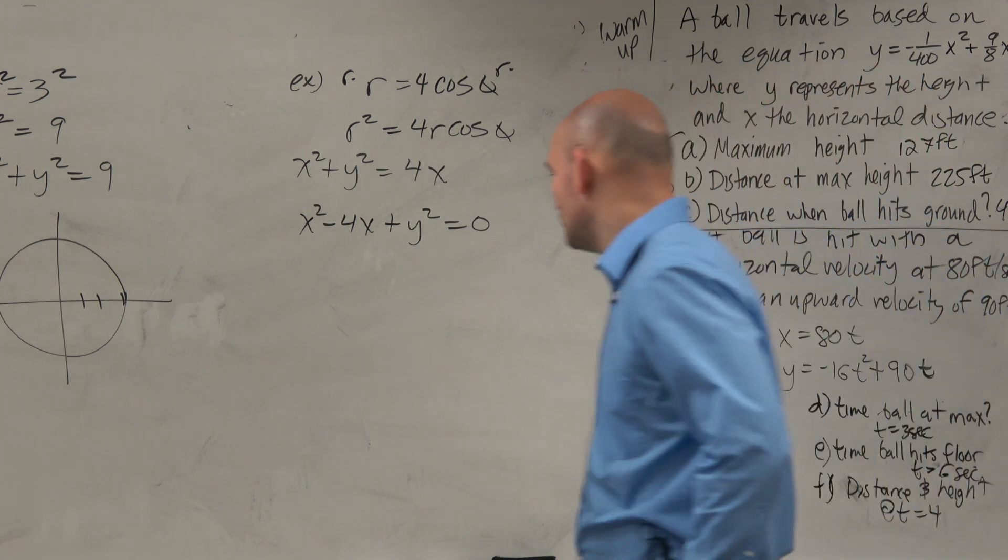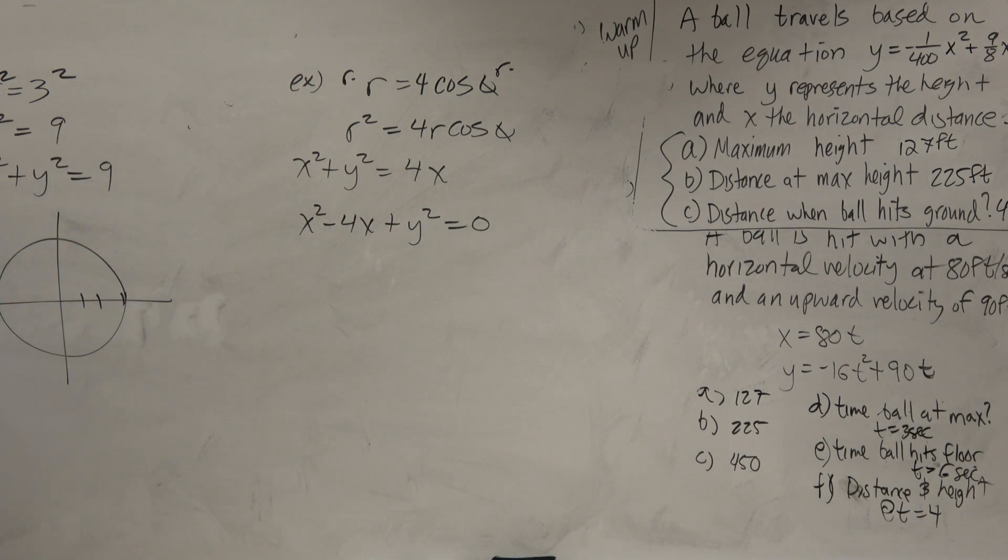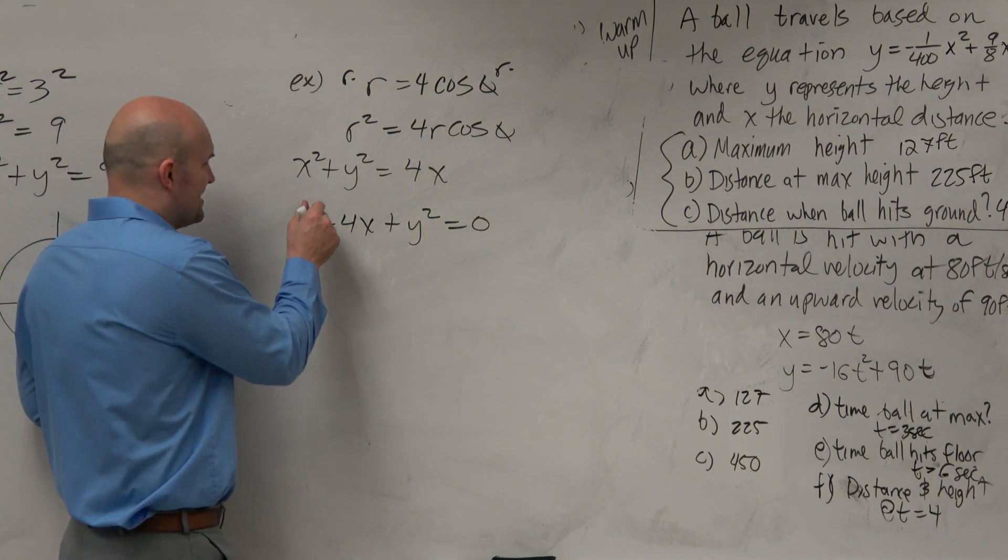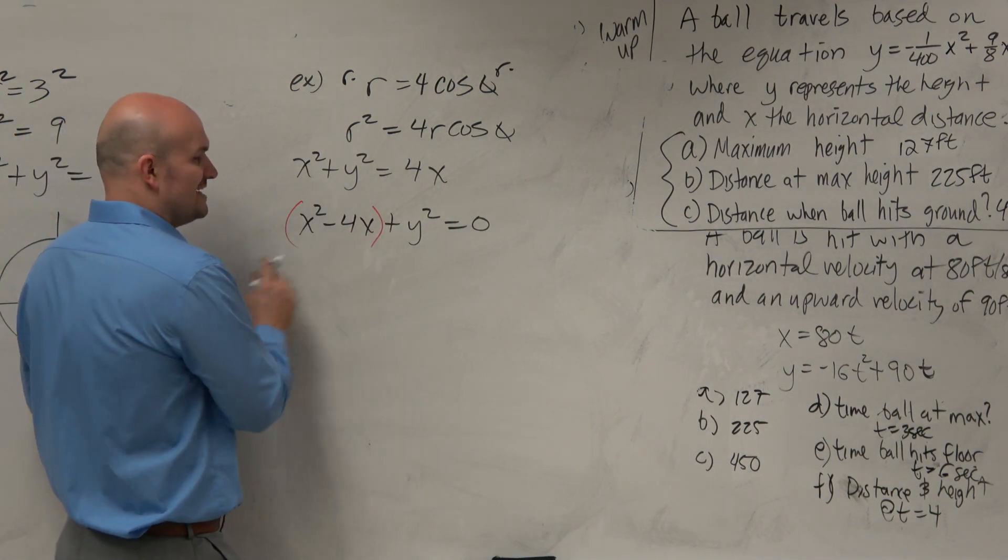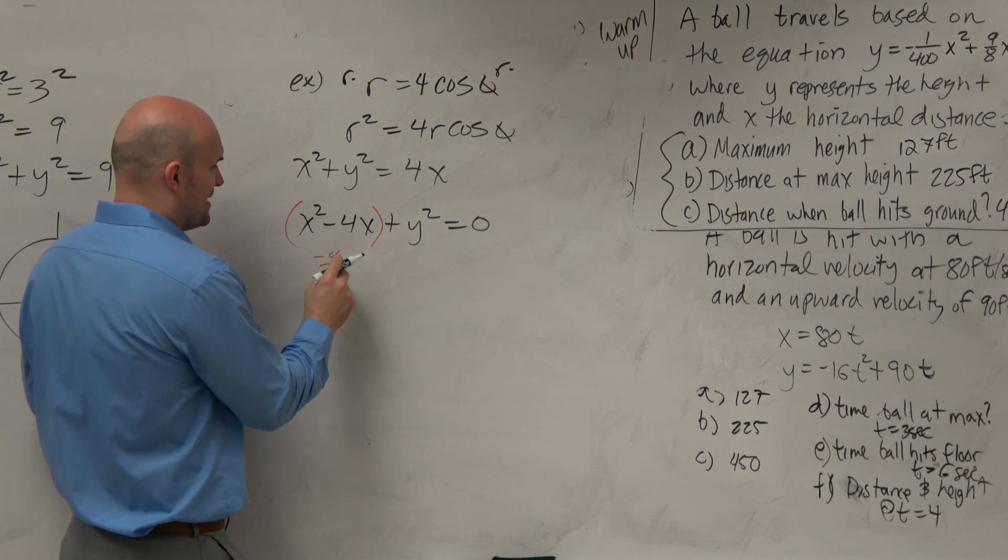We can actually complete the square. Whoa, completing the square has come back. Yes, it has. Take your negative 4, divide it by 2, and square it, which is equal to a positive 4.